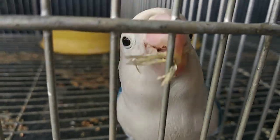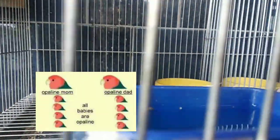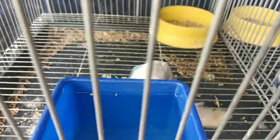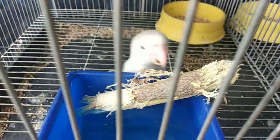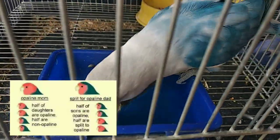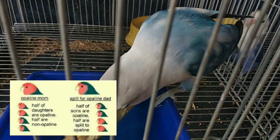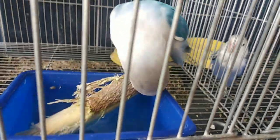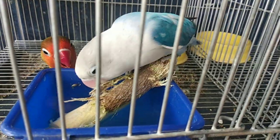Pag-uusapan naman natin kung ano yung magandang bilhin na pares. Kung may budget ka, kumuha ka na kagad ng Opaline na hen at kak — sure ball, wala ka nang problemahin. Lahat ng inakay nila ay Opaline, 100%. Kung medyo may budget ka, doon ka sa Opaline hen at pares niya yung Split Opaline na kak. Dahil may chance kang magkaroon ng Opaline na kak, at maganda yun — kasi mahal yun.